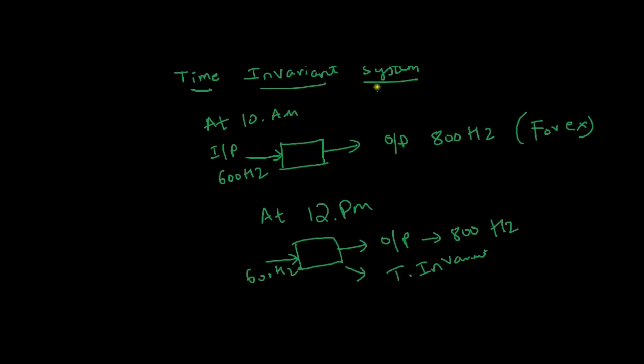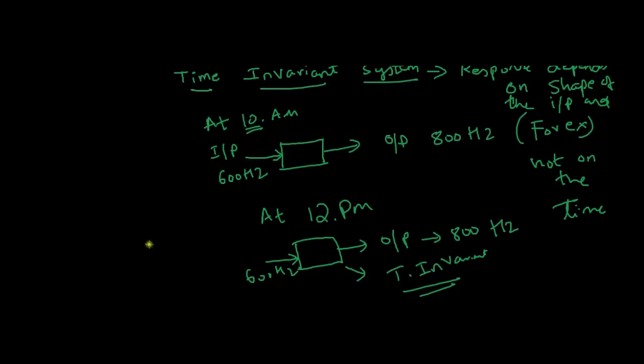The definition of time-invariant system is: the response depends on the shape of the input and not on the time. Such systems are called time-invariant systems. For time-variant systems, if you apply the same signal like 600 Hz, then the output may be different because it depends on time.